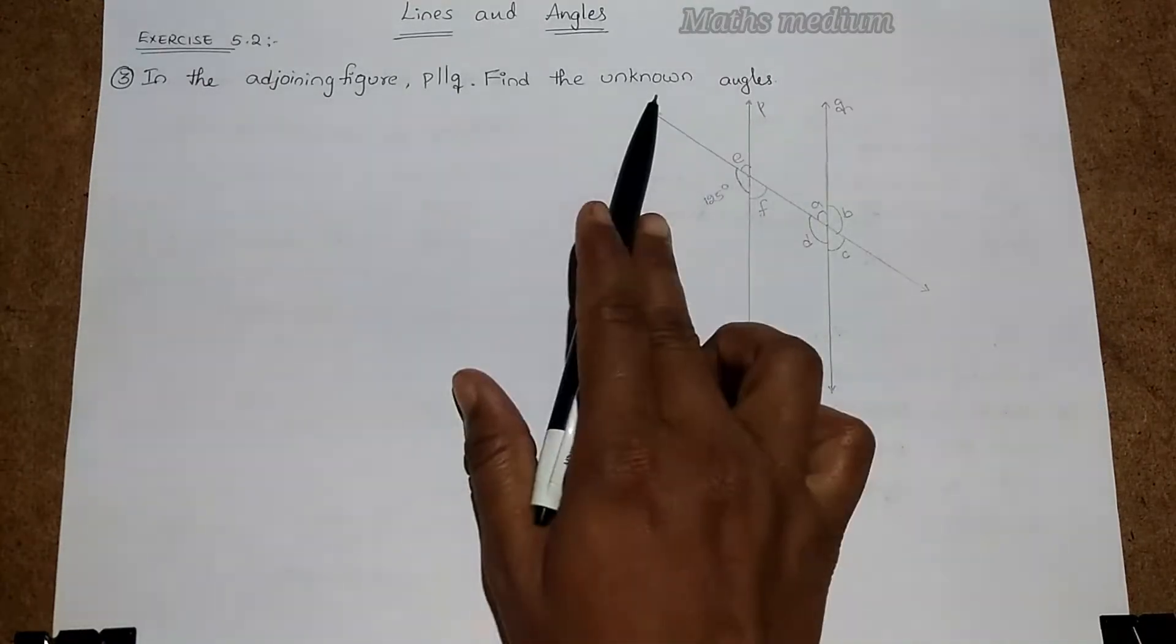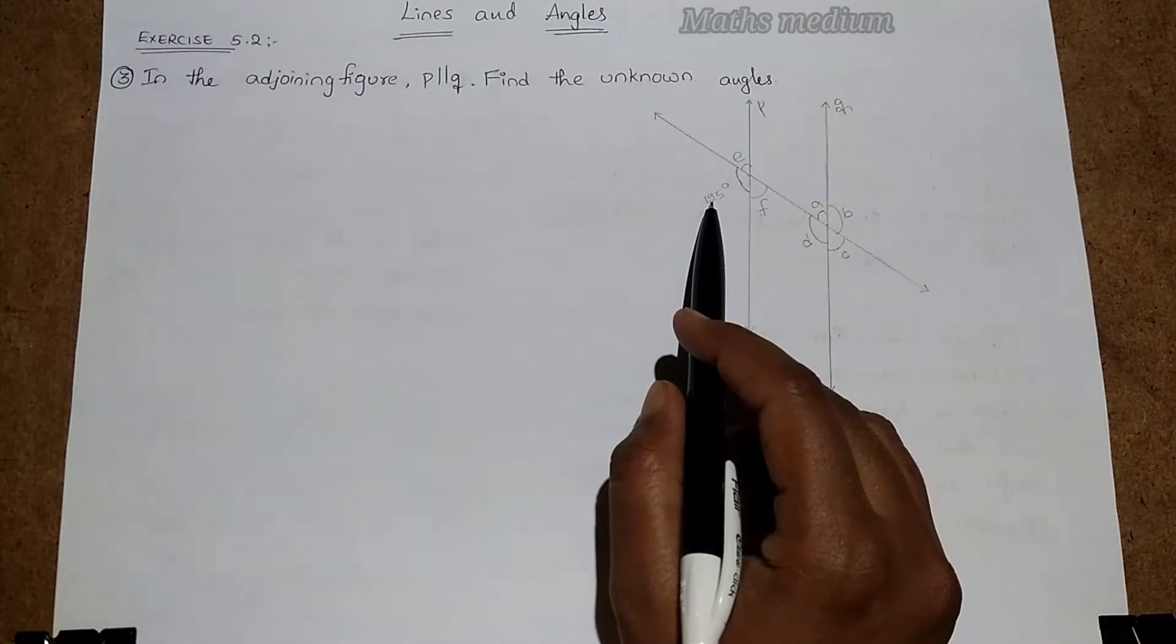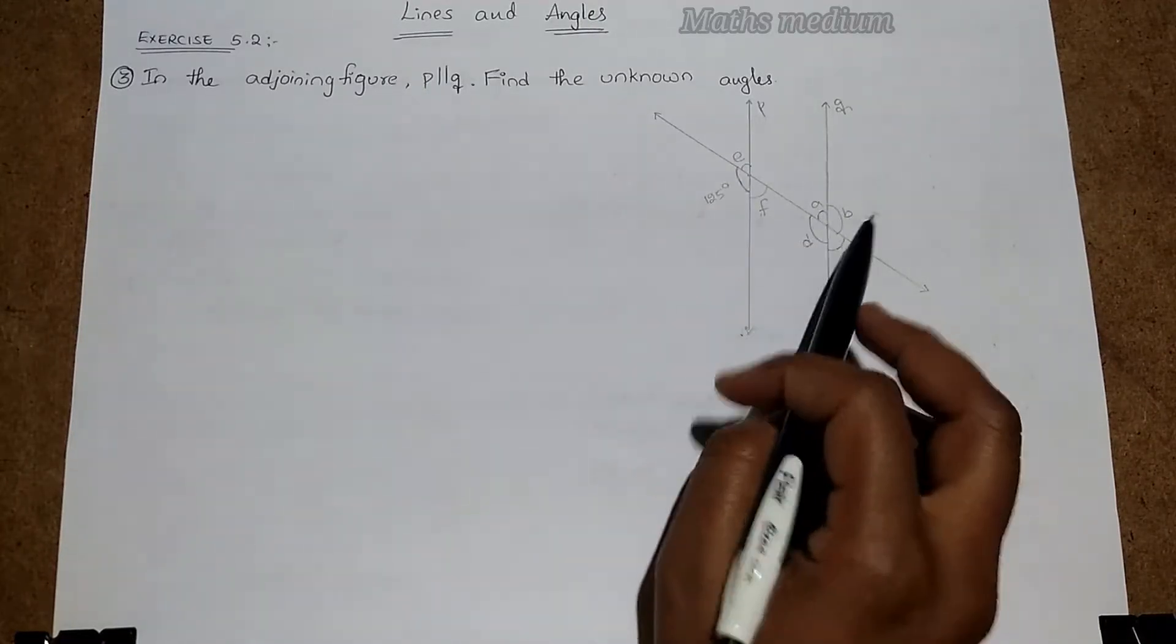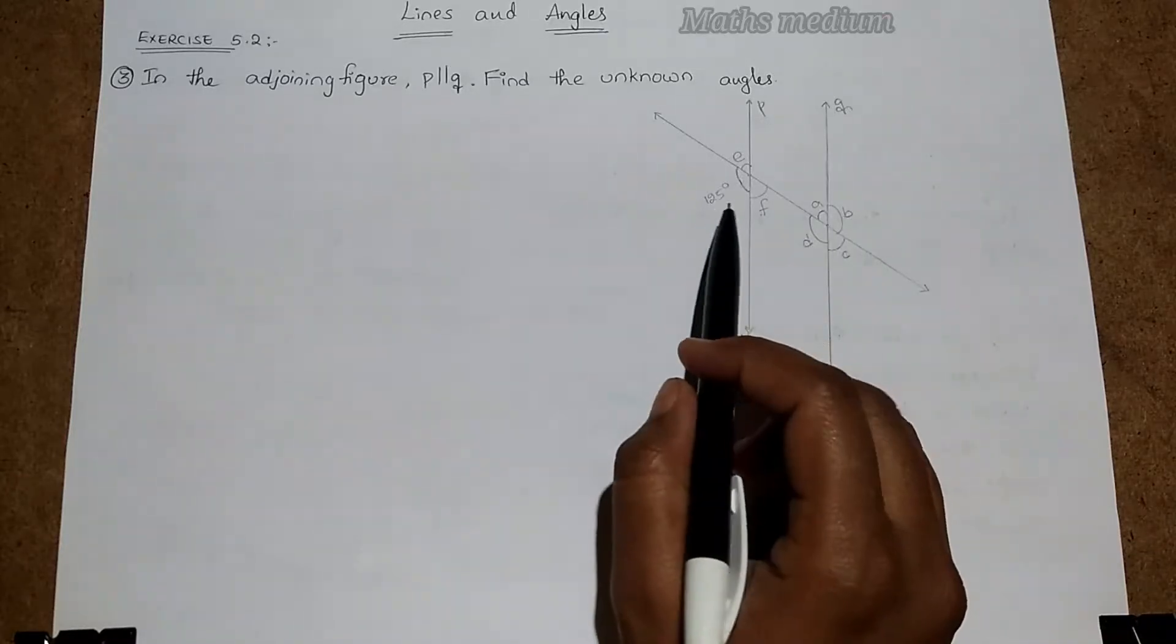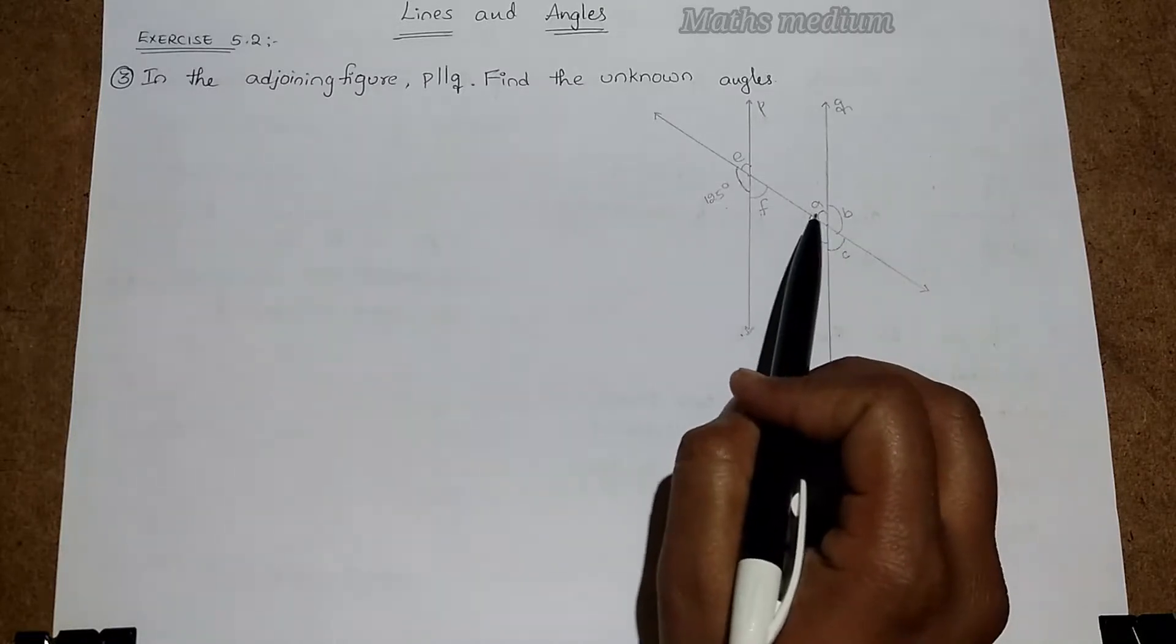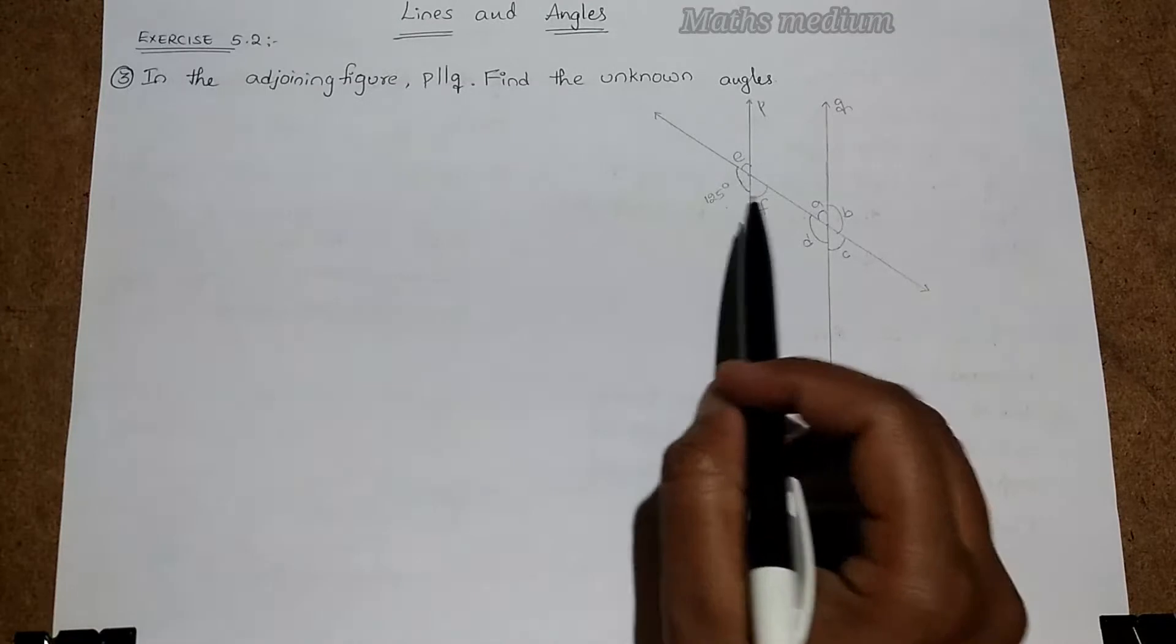We have to find the unknown angles. We know here given is one angle only, so we have to find the remaining angles E, F, A, B, C, D. We can start from here because there is no chance to find angles here also. We have only choices here, so start from here.